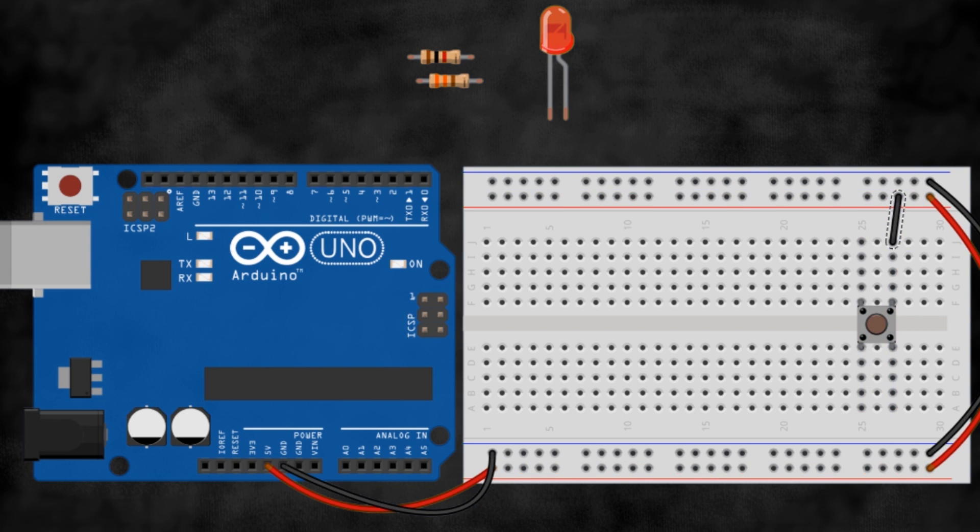Now connect one of the sides of the button to the 5V rail. What we are trying to achieve here is to make the Arduino receive a high signal when you press the button and a low when you don't. As we will use pin 3 to read the state of the button, place a wire between the pin of the Arduino and the board, just like this.